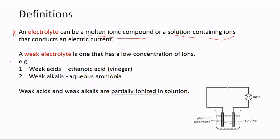With respect to electrolytes we have weak and strong electrolytes. A weak electrolyte is one that has a low concentration of ions present. Examples of weak electrolytes are weak acids — for example ethanoic acid, or vinegar — and weak alkalis, for example ammonia.